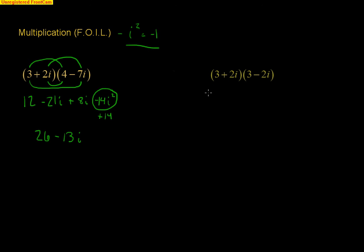Now, I actually have a special multiplication over here. You have 3 plus 2i and 3 minus 2i. These are known as complex conjugates.